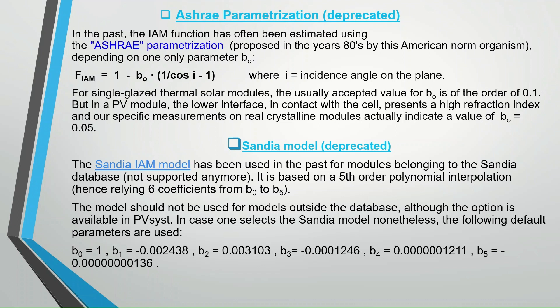The Sandia IAM model has been used in the past for modules belonging to the Sandia database, but is not supported anymore. It is based on a fifth order polynomial interpolation, hence relying on six coefficients from B0 to B5. The model should not be used for modules outside the database, although the option is available in PVSYST. In case one selects the Sandia model nonetheless, the following default parameters are used.